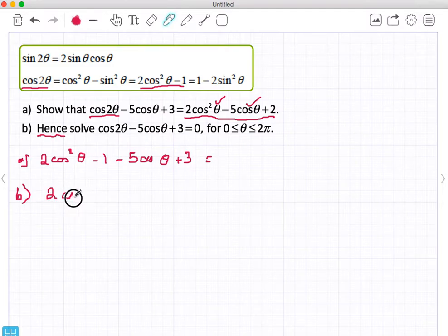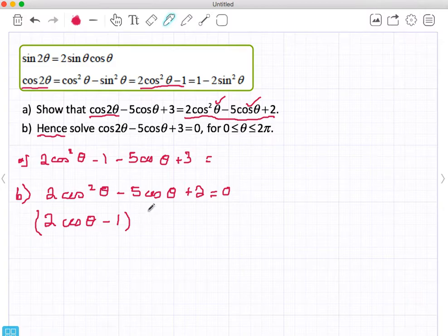So 2 cos² θ minus 5 cos θ plus 2 equals 0. This one will factorize. It becomes (2 cos θ minus 1)(cos θ minus 2).